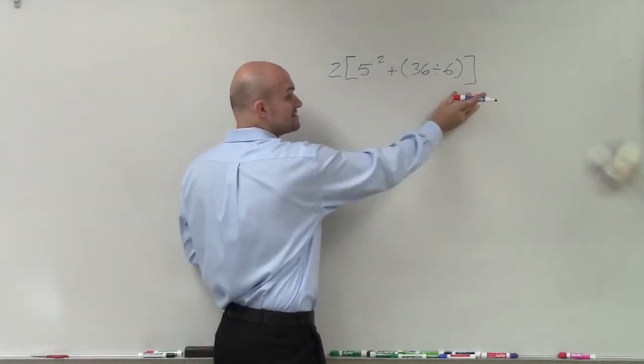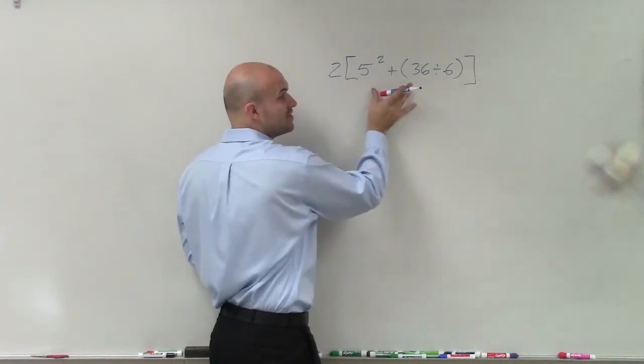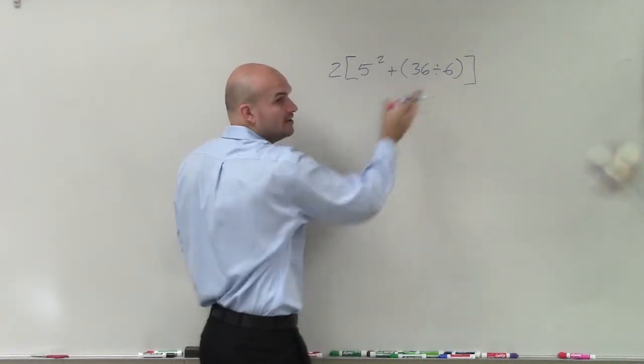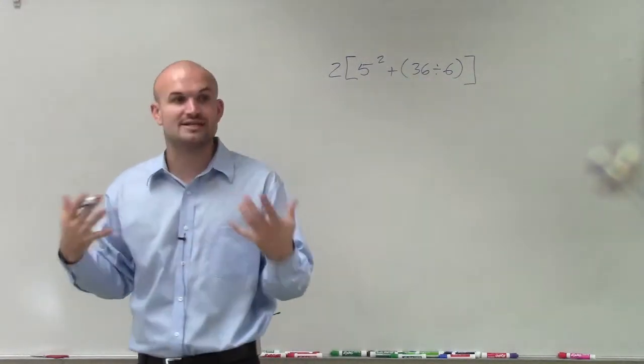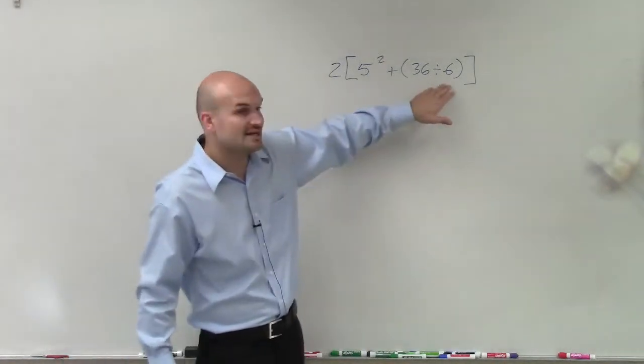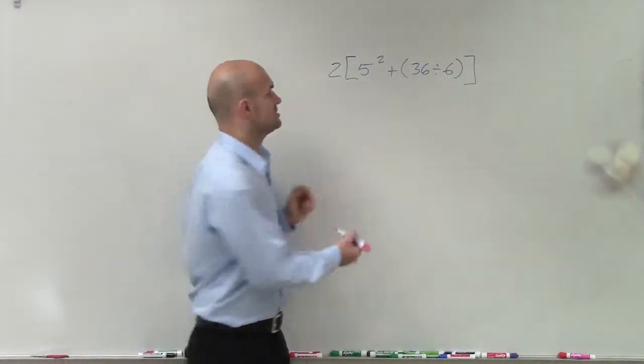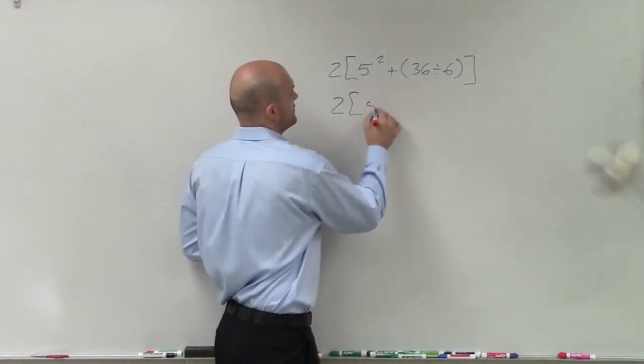So we look at we have brackets, so we're going to do inside the bracket first. But then we have parentheses as well, so we need to apply the operations inside the parentheses. You can see inside the parentheses, we have 36 divided by 6, which is 6. So I'll do that first.